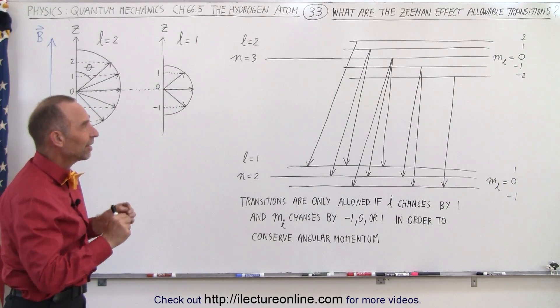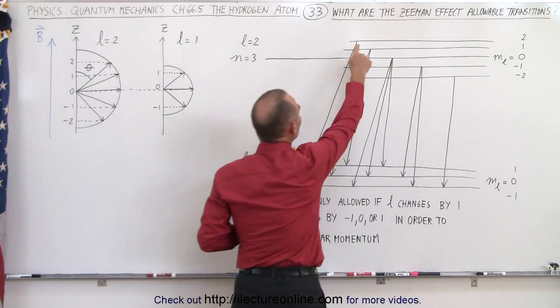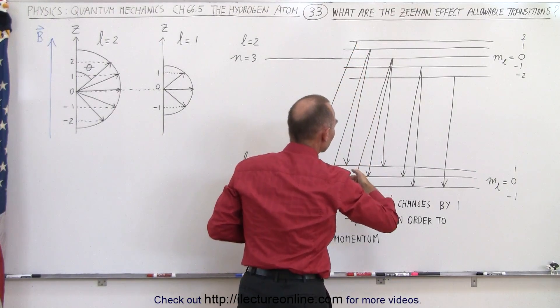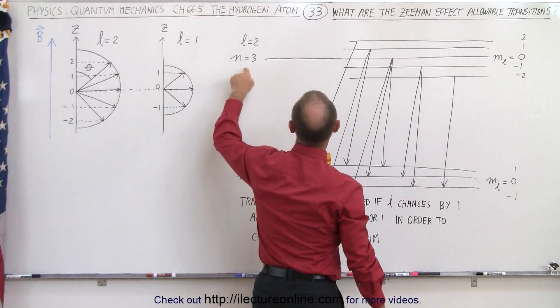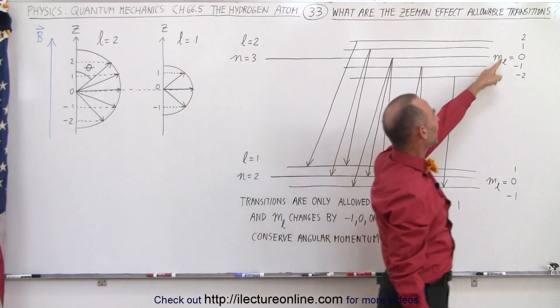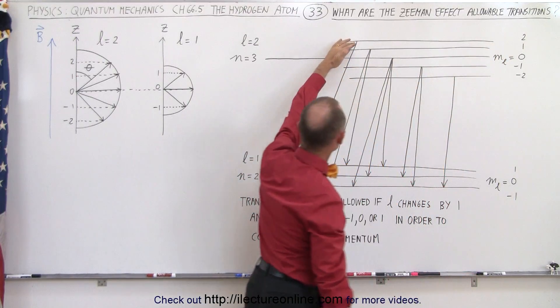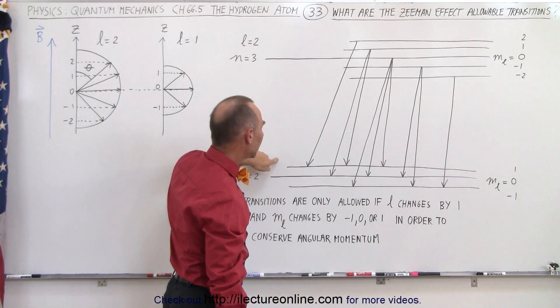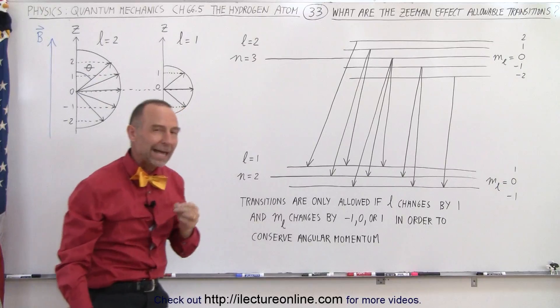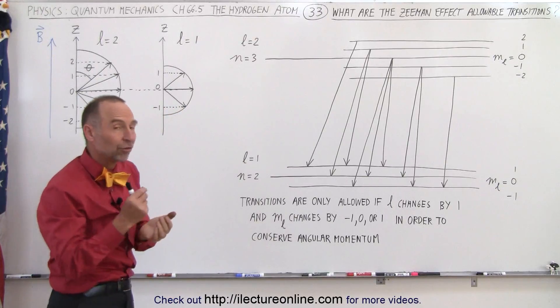And then you can see that instead of being able to jump from any one level to any of the other three levels, there are some restrictions. When we jump from the n equals 3, and m sub l equals 2, that means you can only go to the n equals 2, m sub l equals 1 level. You cannot go to any other level. The reason for that is as follows.